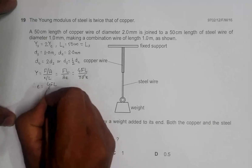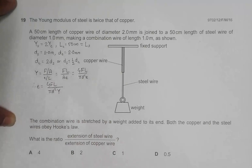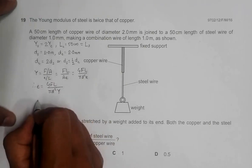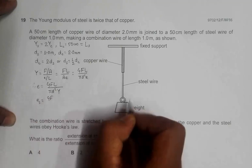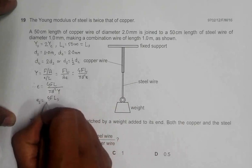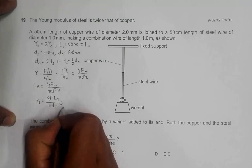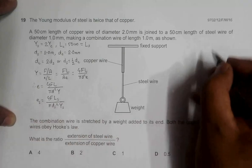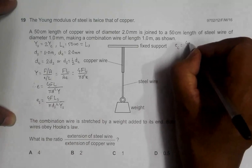This gives us extension equal to 4FL by pi d square Y. So the extension for steel will be equal to 4F, F should be the same on both, LS by pi DS square YS. Similarly, extension for copper is equal to 4F LC divided by DC square YC.